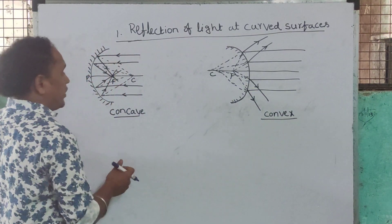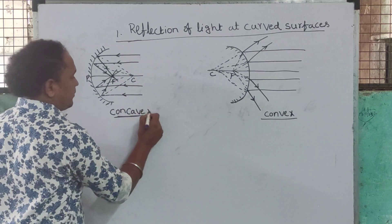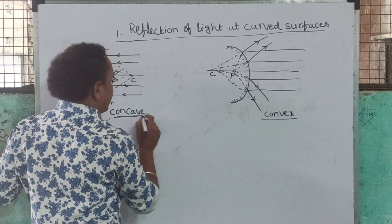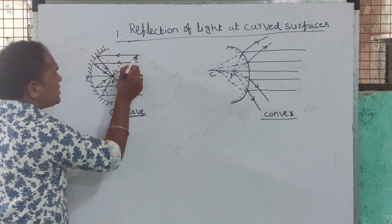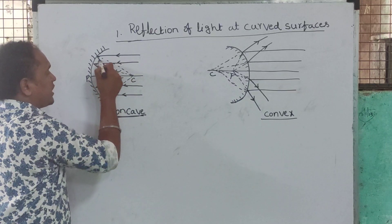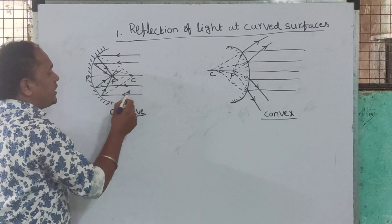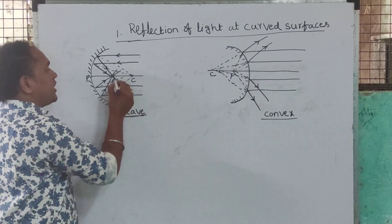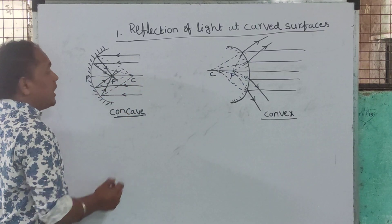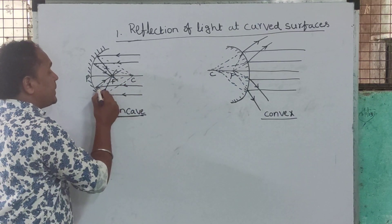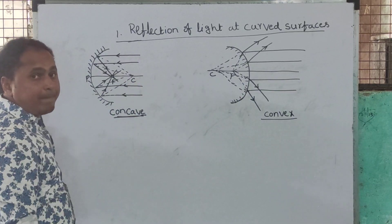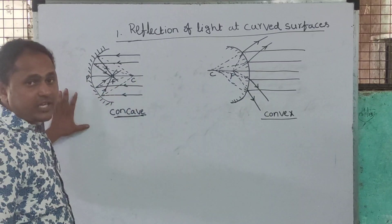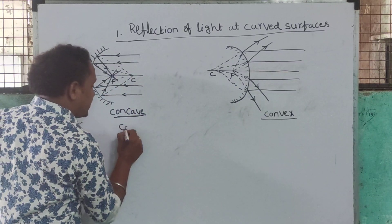Look at the board. This is a concave mirror. Incident rays after striking on the mirror all meet at one point. The normal joining on the principal axis is called the center of curvature. The concave mirror is called a converging mirror.